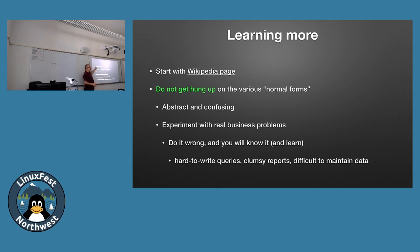Don't get hung up on the normal forms in Wikipedia — that's the math theory, and it's hard to make sense of those generic descriptions. When you look at real examples and real solutions, you'll see how the rules and normal forms got applied. Don't think you're too dumb to do this — it is hard to understand because it's completely abstract when just described. Basically underneath all the normal forms, it comes down to redundant data: we want the least amount of data in the database possible.